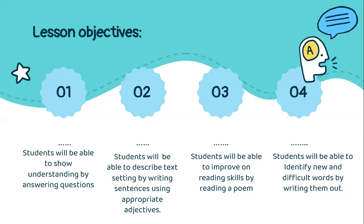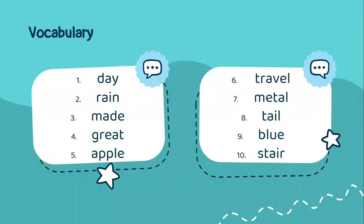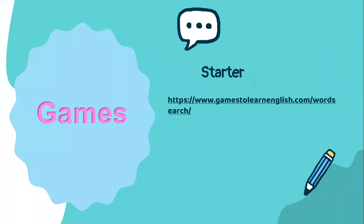So for today's lesson objectives, which are three and four: today you will be able to improve on your reading skills by reading a poem, and you will also be able to identify new and difficult words by writing them out. So that is it. And the vocabulary words for the week — you can go through them again. Remember, our spelling test is coming soon. For our starter, we'll be using this game. I'll be leaving this link on for now, so you can go ahead and play it at your own time.